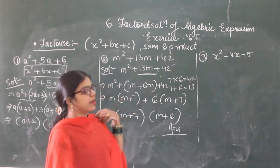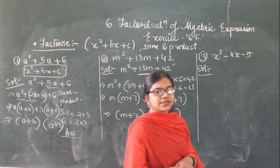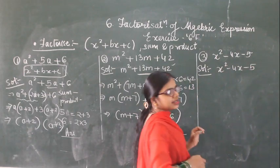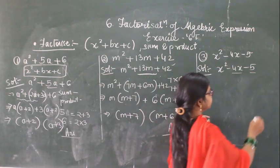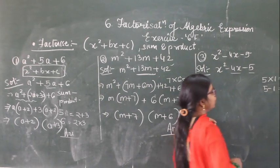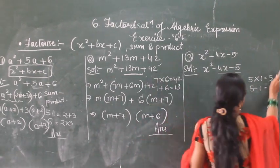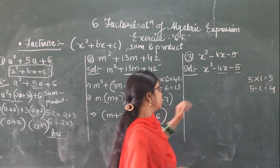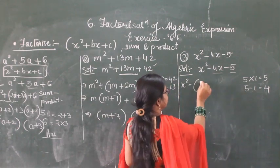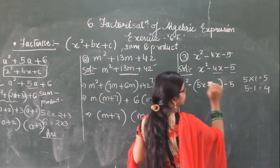The next question here is x square minus 4x minus 5. Here also this is in the form of x square plus bx plus c, but here subtraction is there. x square minus 4x minus 5 — just see the middle term. If I write 5 into 1 equals 5, and if I subtract 5 minus 1 equals 4, so the product is 5 and the difference is 4. So these are the correct numbers. So what you will write: x square minus 5x minus 1x, since 5x minus 1x is 4x. This minus 5 will remain as it is.